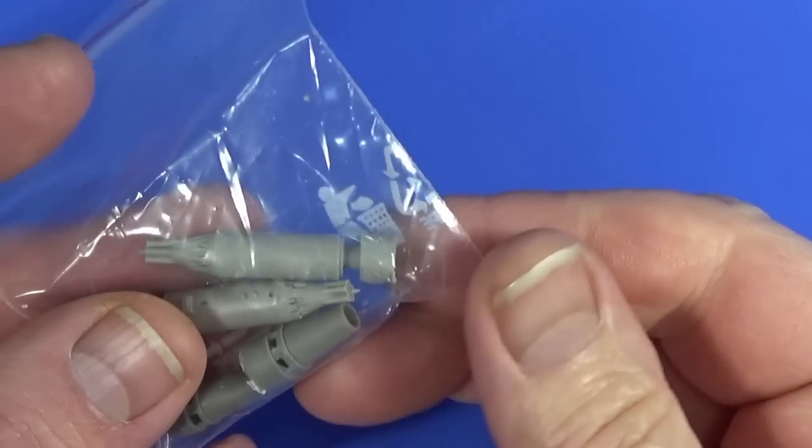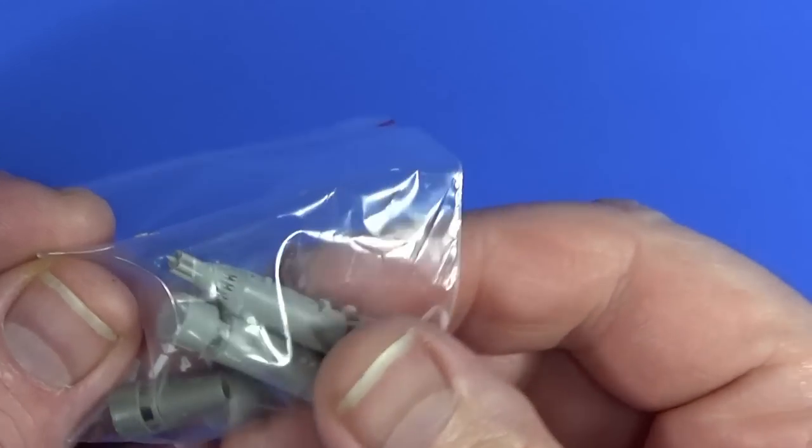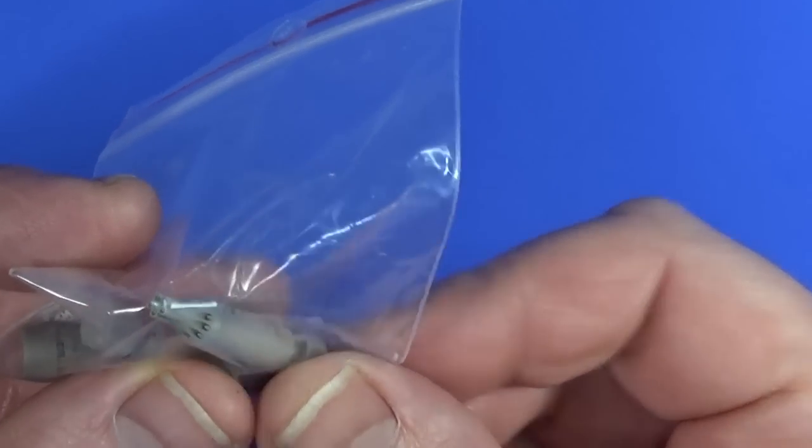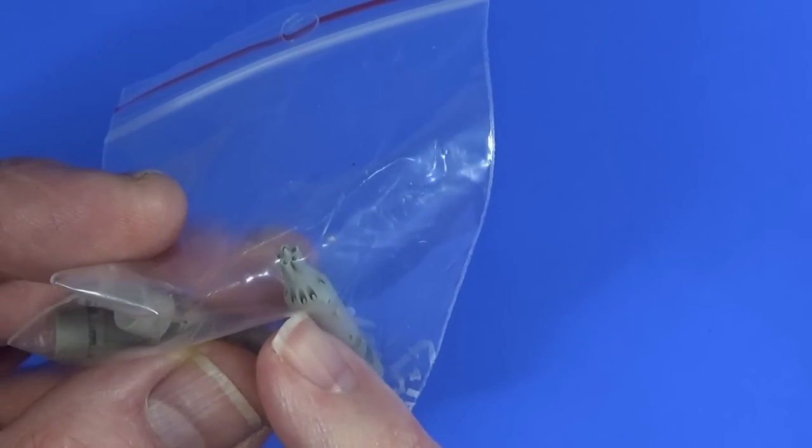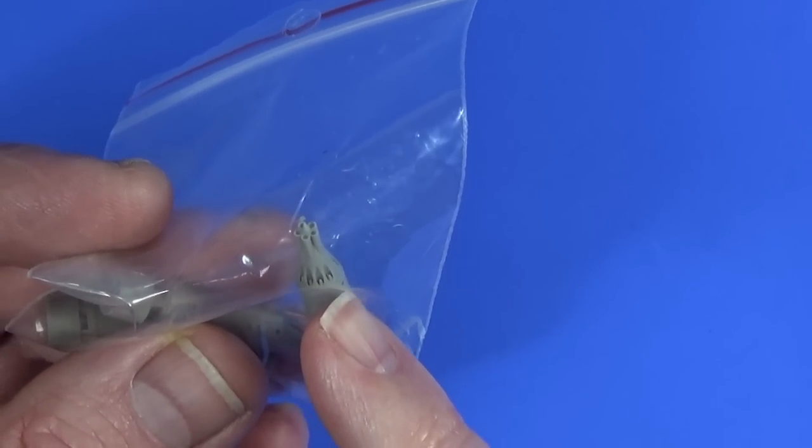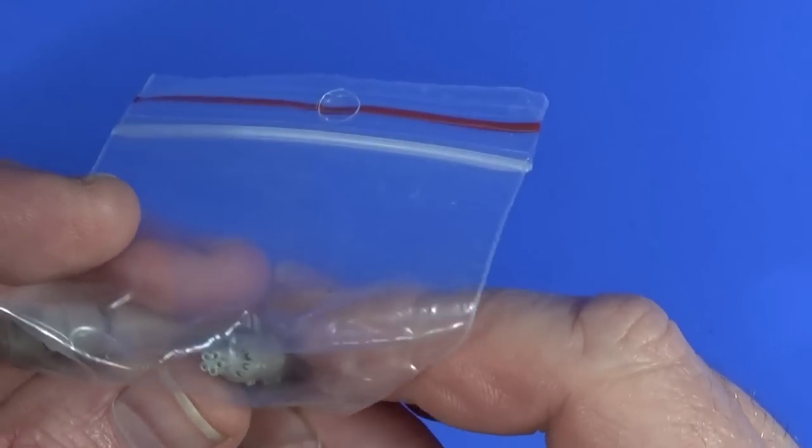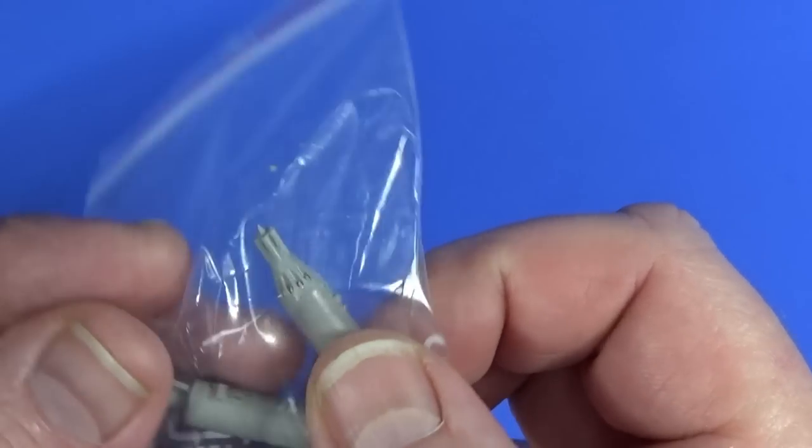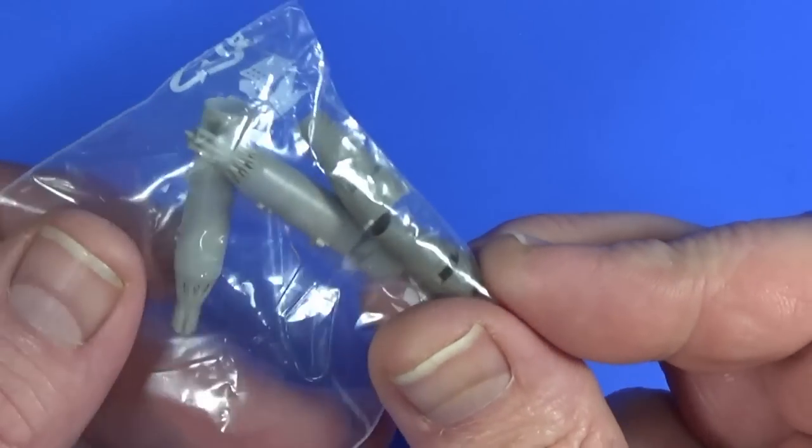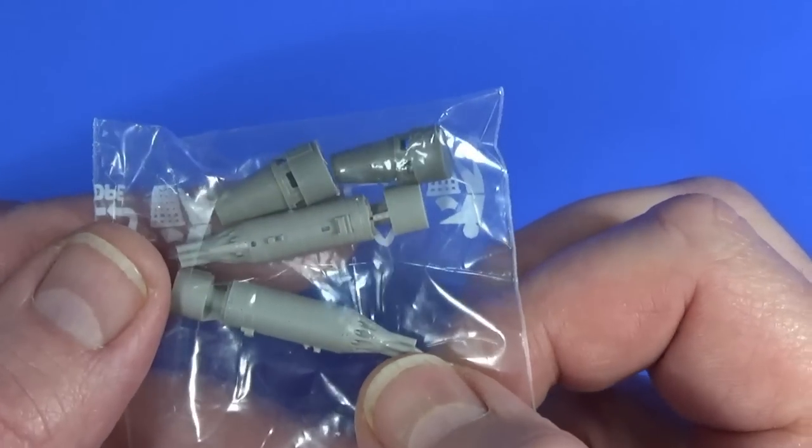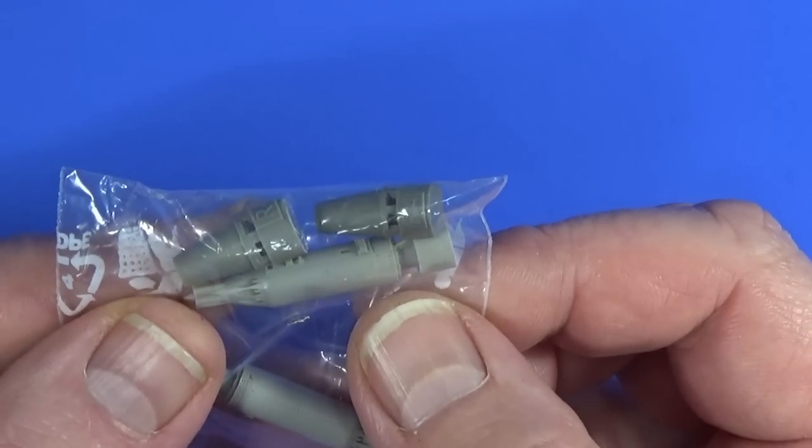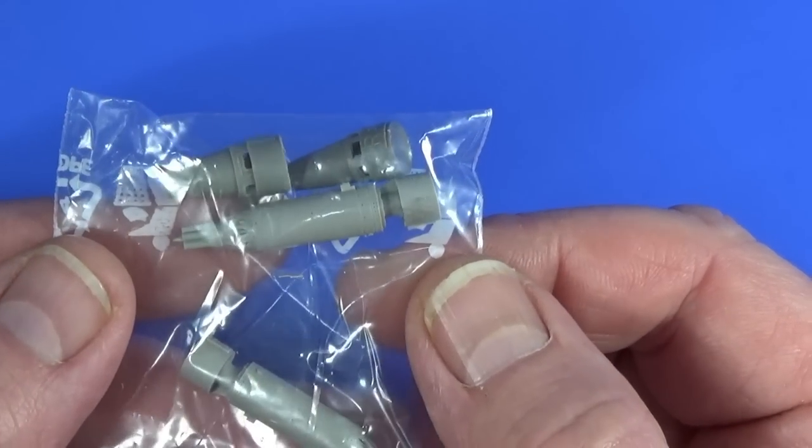There's a bag here, containing two rocket pods that are obviously resin molded. The detail in here is exquisite with the little heads of the rockets there poking out. Very beautiful. Very pretty. If you're doing a ground attack MiG-21. Which of course I'm not, which is a pity in many respects. But there we go.